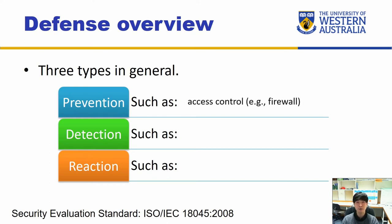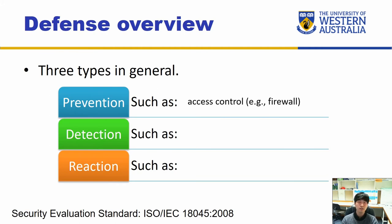One prevention example is access control. If you have access control, you can prevent a lot of different attacks — people trying to access data they're not supposed to can be blocked easily. A firewall is one form of access control. There are different types of firewalls, which we'll cover later, but one of the simplest is blocking packets based on IP addresses. If the IP address matches an allowed one, the packet is let in; otherwise, it's blocked. That prevents external entities from getting in.